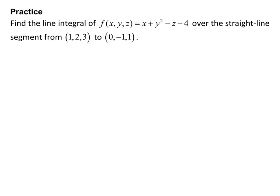Practice problem: Find the line integral of f(x, y, z) = x + y² − z − 4 over the straight line segment from (1, 2, 3) to (0, −1, 1). They're giving us a starting point and an ending point, but they're counting on us to come up with the parametrization for the curve and the starting and ending t values.